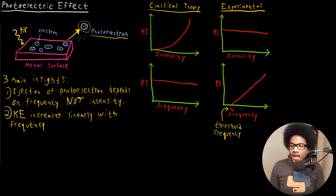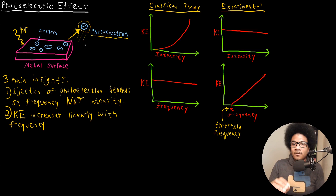The second insight is that kinetic energy increases linearly with frequency. The kinetic energy has a linear dependence on the frequency of the radiation, not the intensity. The third insight is that even at very low intensities, if you come in with the right frequency, you will have an ejected photoelectron.